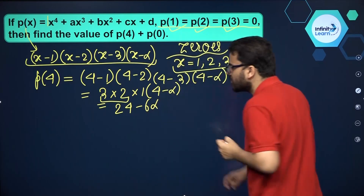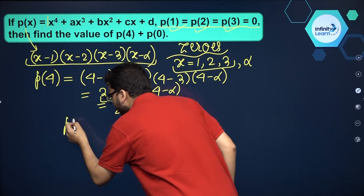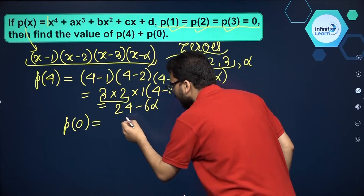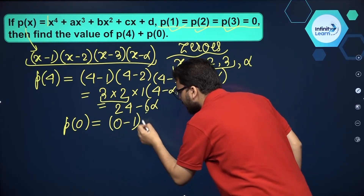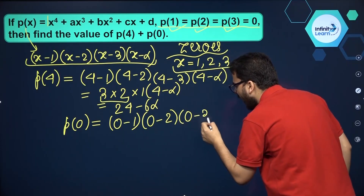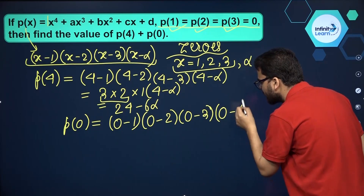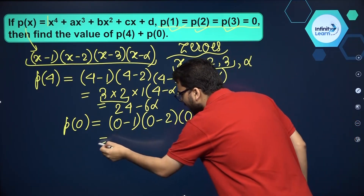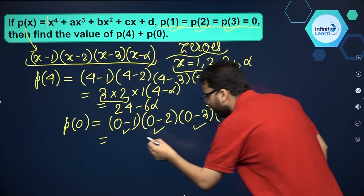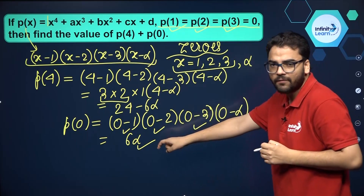Now for p of 0, we put x equal to 0: (0 minus 1)(0 minus 2)(0 minus 3)(0 minus alpha). Simplifying: negative 1 times negative 2 times negative 3 times negative alpha. There are 4 negative signs, so they cancel out, giving us 1 times 2 times 3 times alpha, which equals 6 alpha. So p of 0 equals 6 alpha.